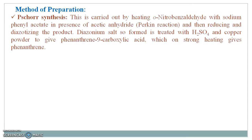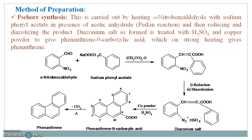Now the different methods of preparation. The first one is the Pschorr synthesis. This is carried out by heating ortho-nitrobenzaldehyde with sodium phenyl acetate in the presence of acetic anhydride via a Perkin reaction to form a product. Further, on reduction and diazotization of this formed product, a diazonium salt is obtained. This diazonium salt is then treated with sulfuric acid and copper powder to give phenanthrene-9-carboxylic acid, and on strongly heating it gives phenanthrene.